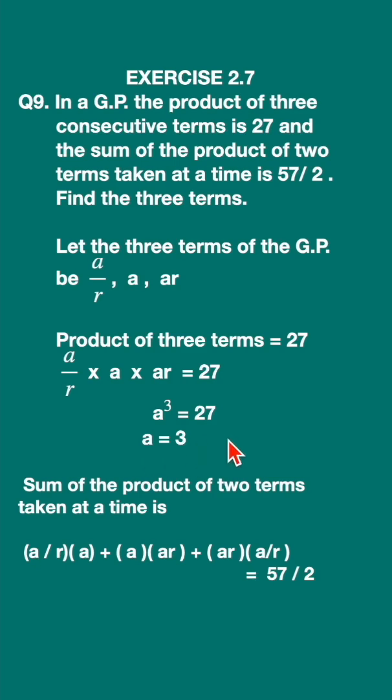Now let us find out the value of r. Once you get the value of r, you can substitute and you will get the three terms of GP.